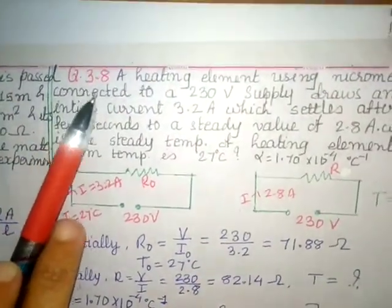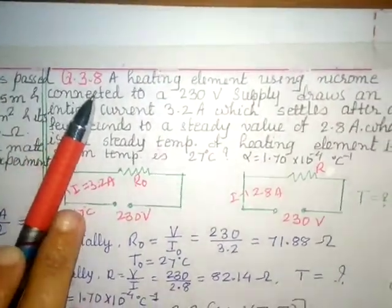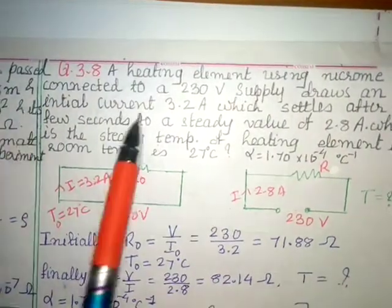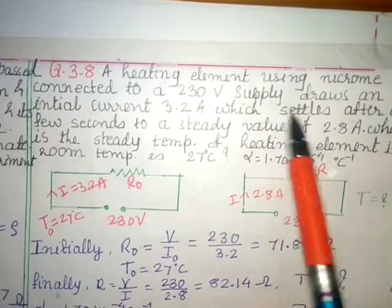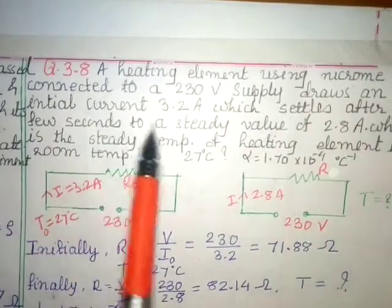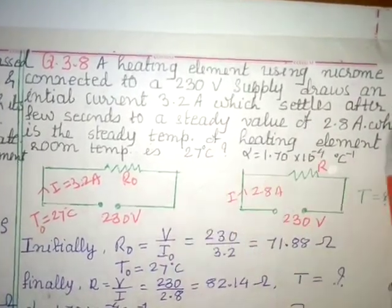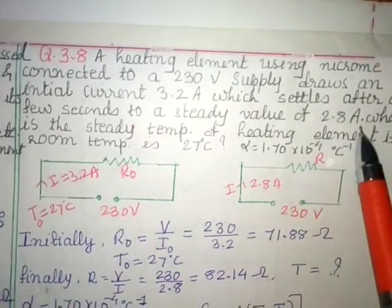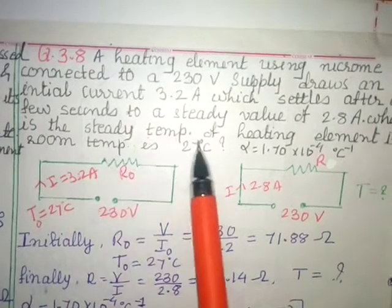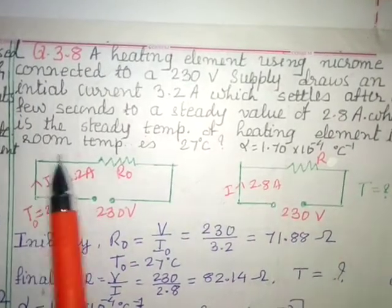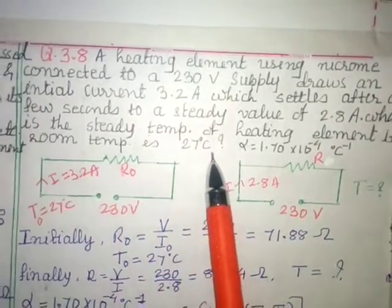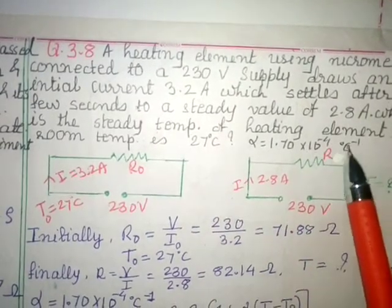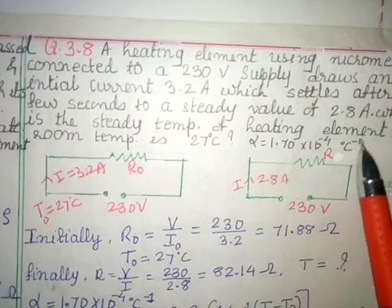Chapter 3 Current Electricity Exercise Question Number 3.8: A heating element using nichrome connected to a 230V supply draws an initial current of 3.2A. This settles after a few seconds to a steady value of 2.8A. What is the steady temperature of the heating element if room temperature is 27 degrees Celsius and alpha is given to you as 1.70 times 10 to the power minus 4 degree Celsius inverse?